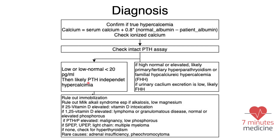If the PTH is low or low-normal — less than 20 — this is likely PTH-independent hypercalcemia. For the differential diagnosis, you first have to rule out malignancy, especially in older patients. You also need to rule out milk-alkali syndrome by asking about excessive use of antacids, especially if the patient has alkalosis and low magnesium.